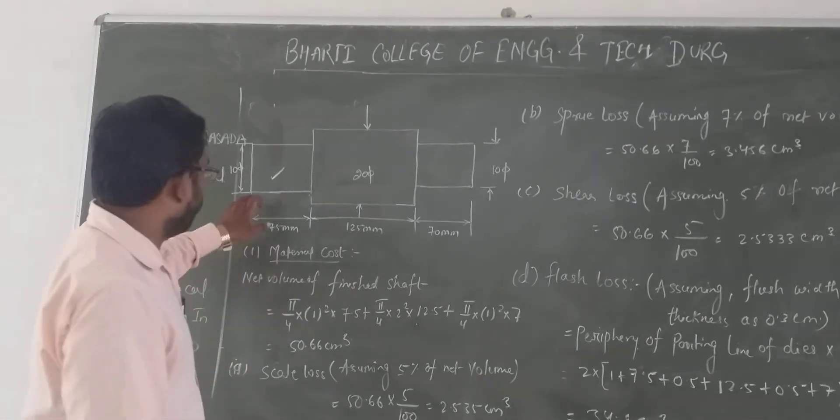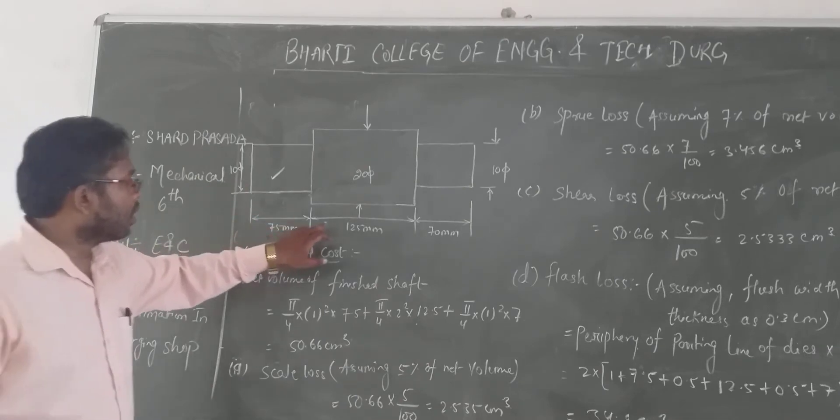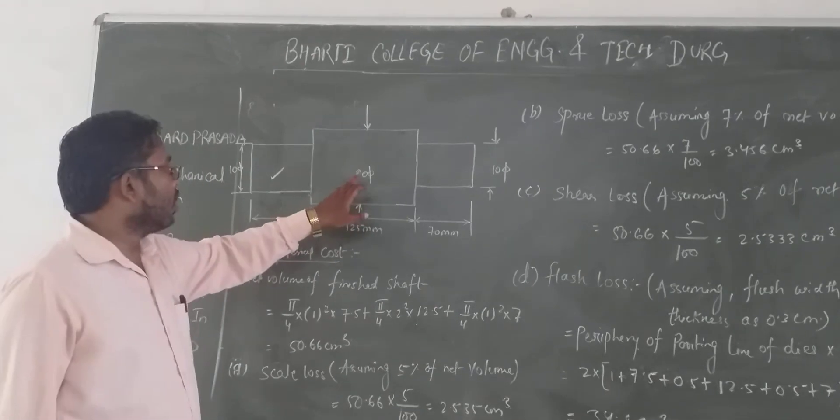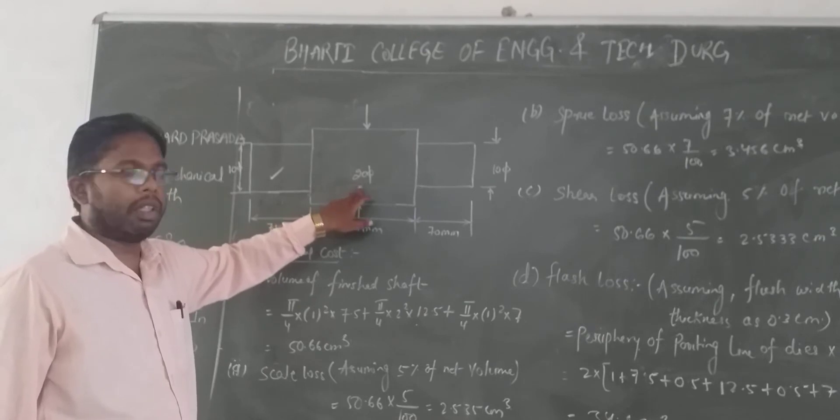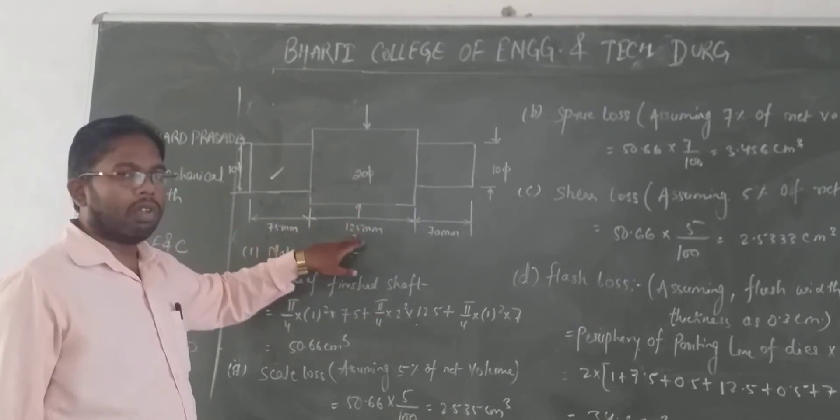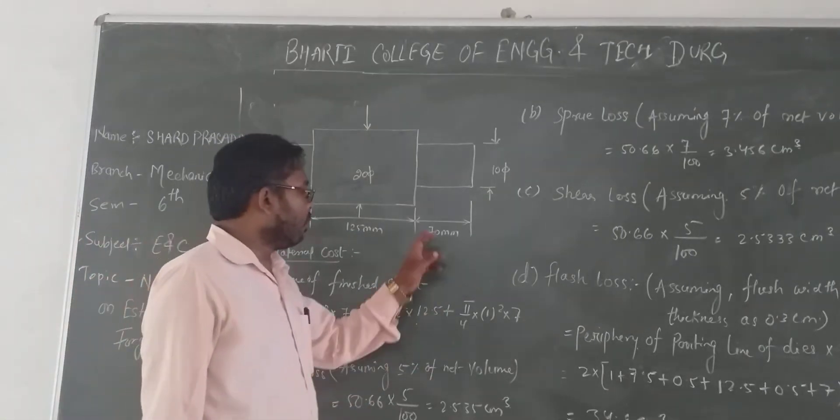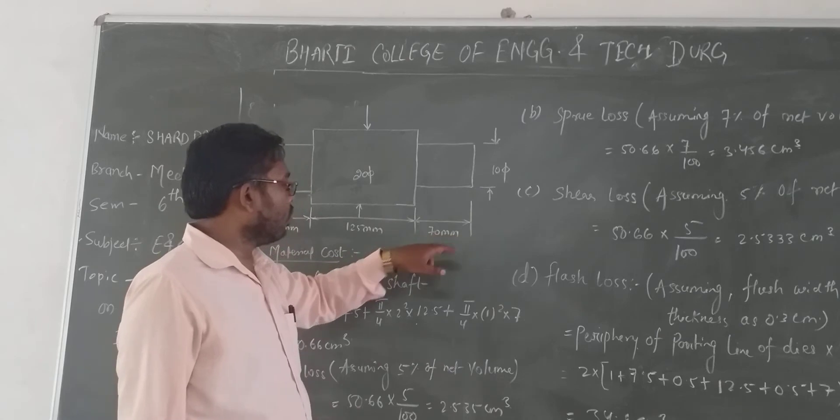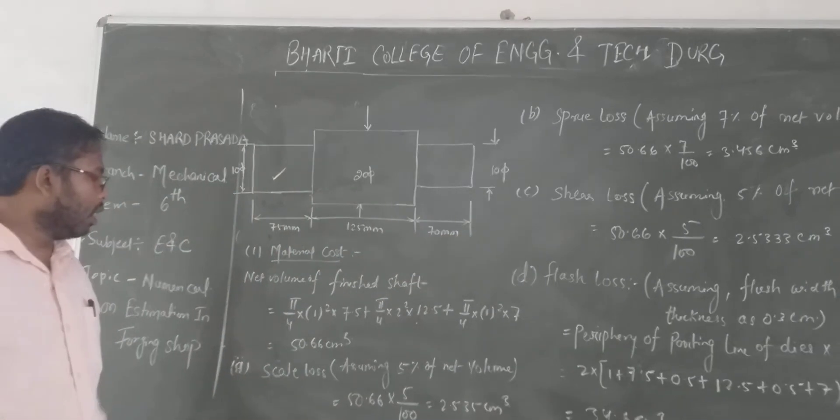That's π/4 × 1² × 7.5 plus π/4, converting 20 millimeters to centimeters, 2² × 12.5, plus π/4 × 1² × 7. Solving this gives 50.66 cm³.